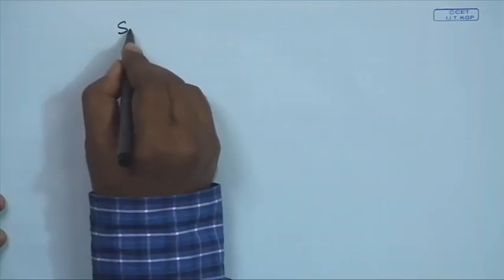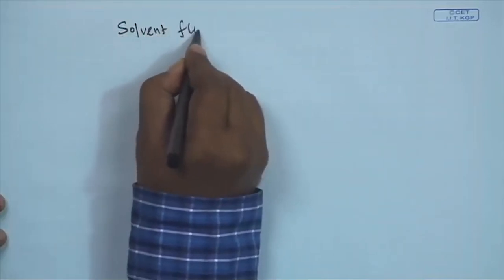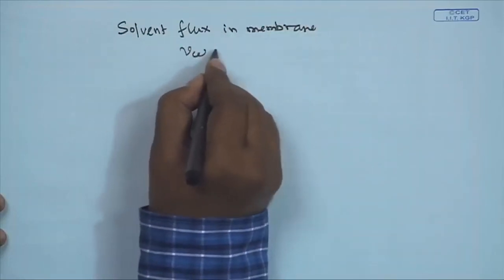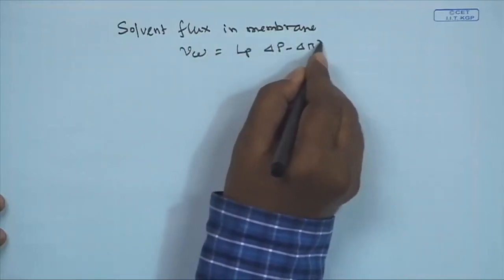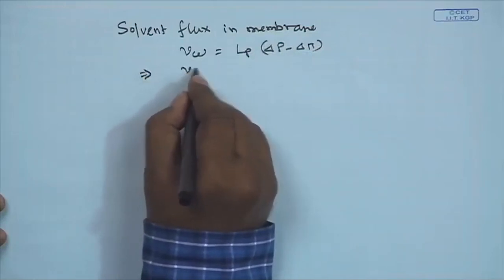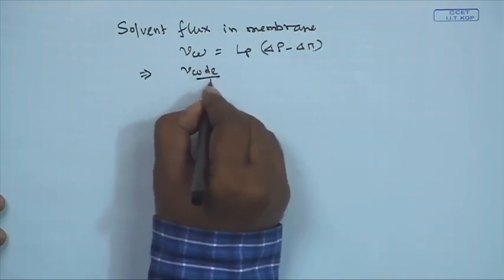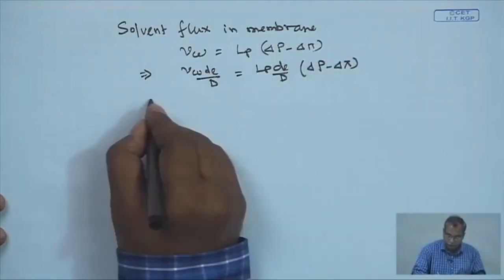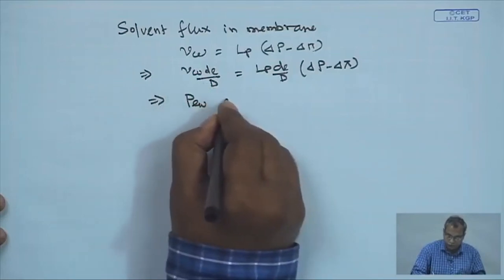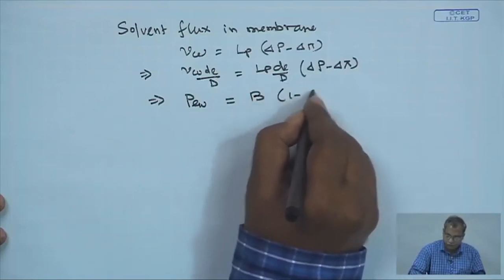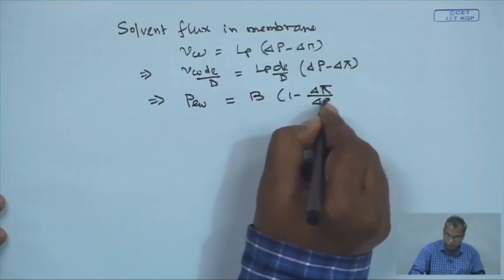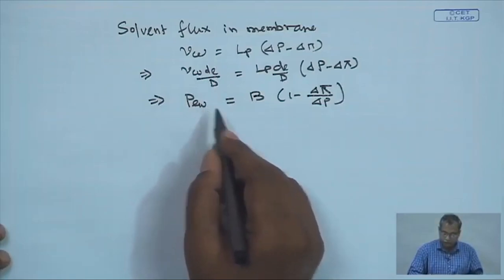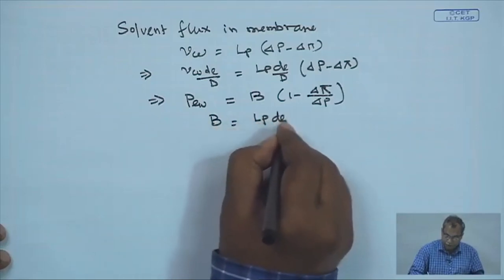Once we get that, we hook up with the transport laws for the porous membrane. Looking into the solvent flux in the membrane: V_w is equal to L_p times (ΔP minus Δπ). We make it non-dimensional by defining V_w·d_e/d — multiplying both sides by d_e/d — so it becomes L_p·d_e/d·(ΔP − Δπ). This non-dimensional permeate flux P_w equals that expression, and B is a non-dimensional parameter L_p·d/d.